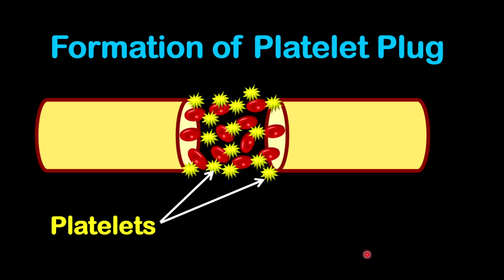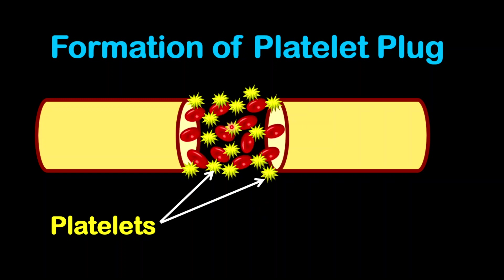Platelets will rush to the area where the blood vessel is being ruptured. This will result in a high concentration of platelets within this area, and the platelets will create a plug or a clog. The reason for this platelet plug is to reduce the flow of blood outside of the body.